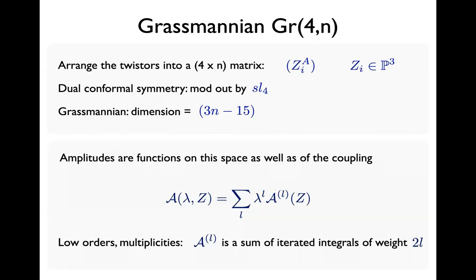Amplitudes are functions on this Grassmannian space — functions of the kinematic data. They're also functions of the coupling. In a planar theory, we have the 't Hooft coupling, and we perturbatively expand: a sum over powers λᴸ for L loops. The coefficient at L loops is the L-loop amplitude, literally just a function on the Grassmannian. At low orders in perturbation theory and low multiplicities, we find experimentally that these L-loop amplitudes are given by a sum of iterated integrals of weight 2L.